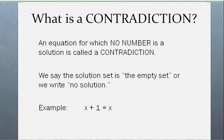What's a contradiction? It's sort of the other extreme. An equation for which no number is a solution is called a contradiction. When you have a contradiction, the solution set — some people say it's the empty set, others prefer to write no solution. The first example is x plus 1 equals x. There's no number in the world that's going to make that true because when you add 1 to a number, it changes it. If I take 5 and plug it in, 5 plus 1 compared to 5 — there's no way those are equal. If I take 0, 0 plus 1 is not equal to 0. So no matter what I try, I can't find a solution. That's called a contradiction.